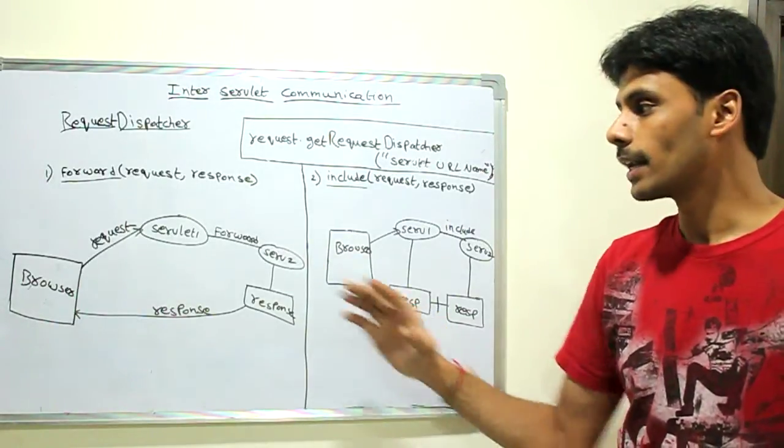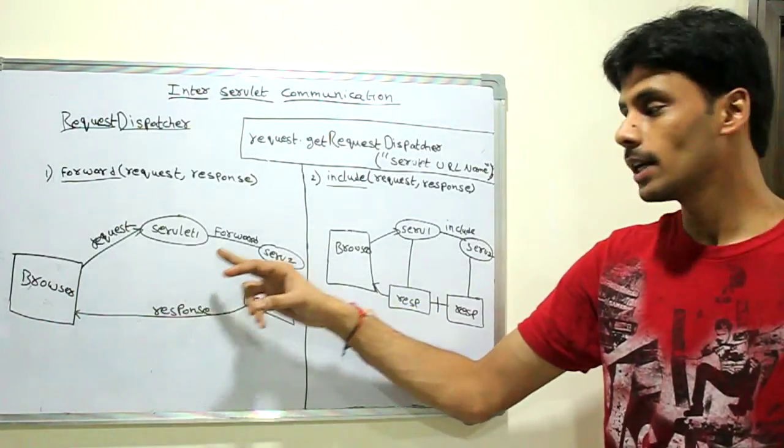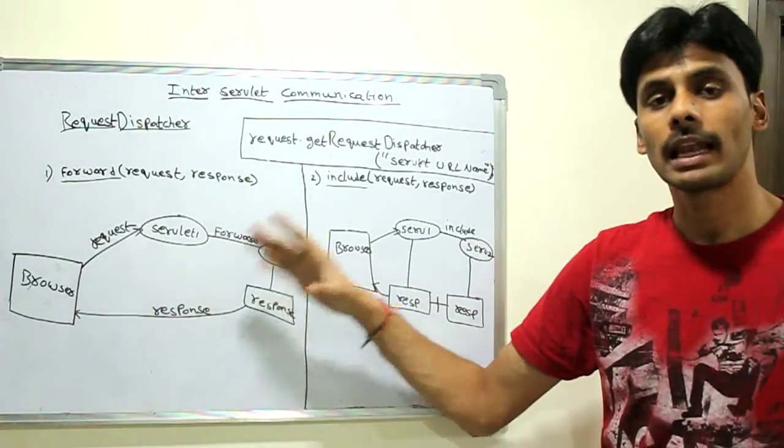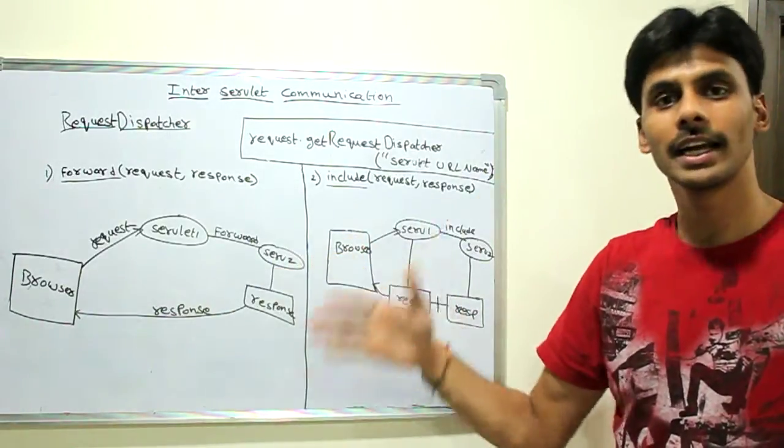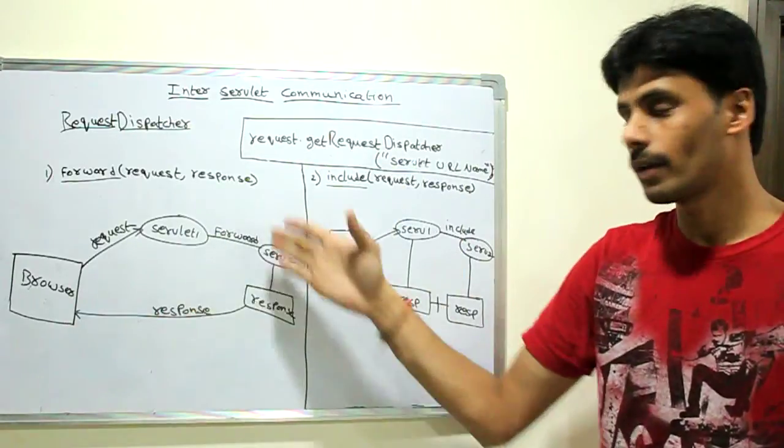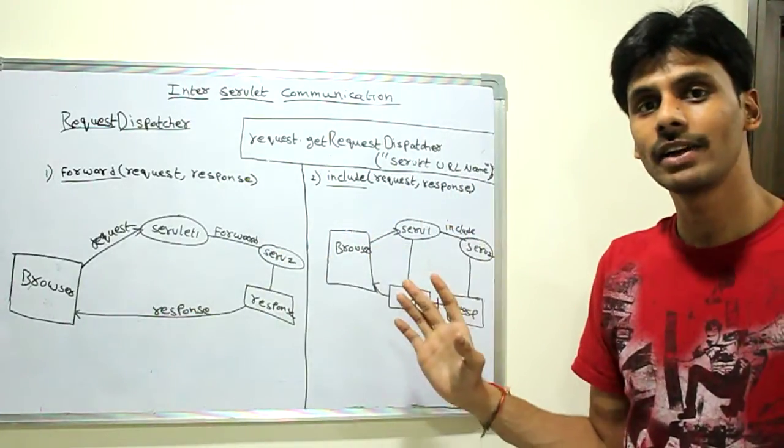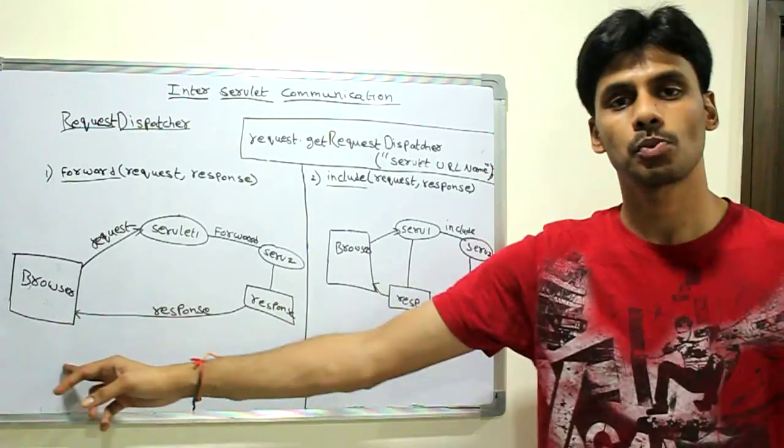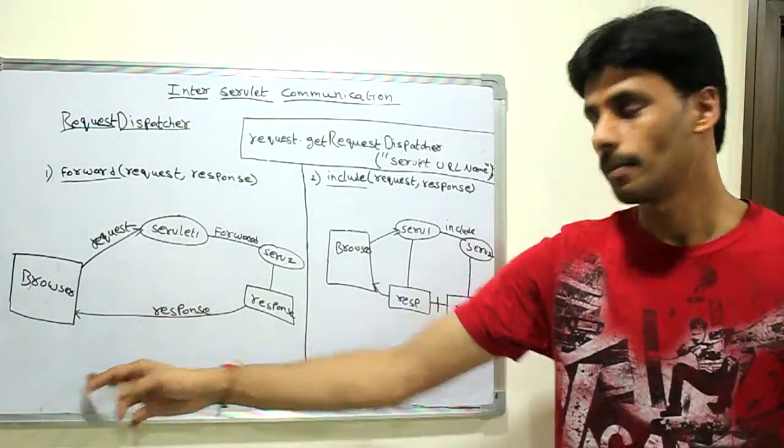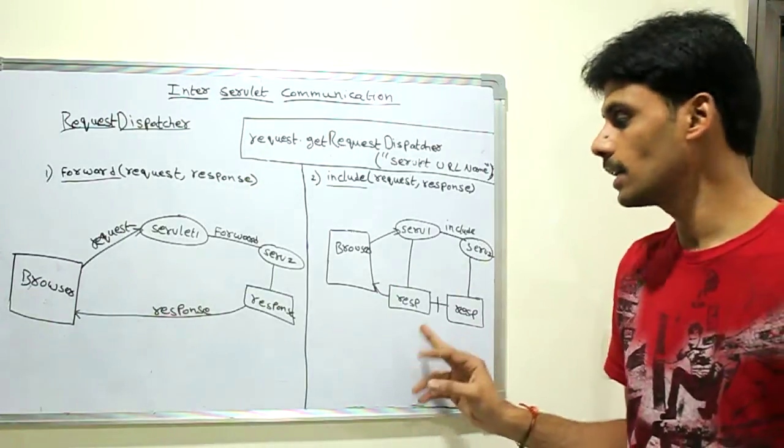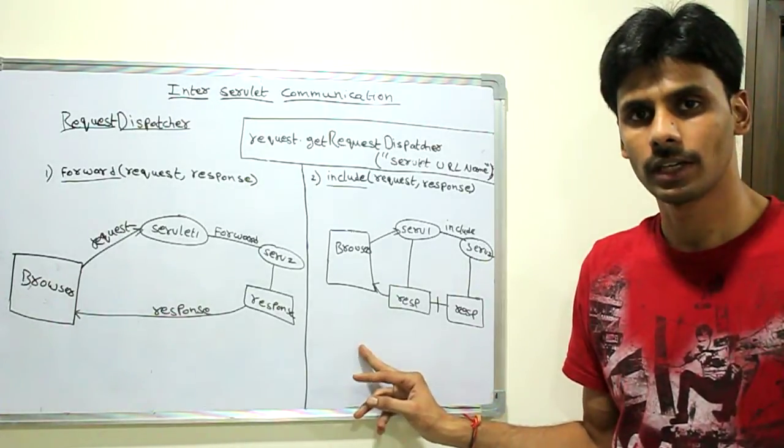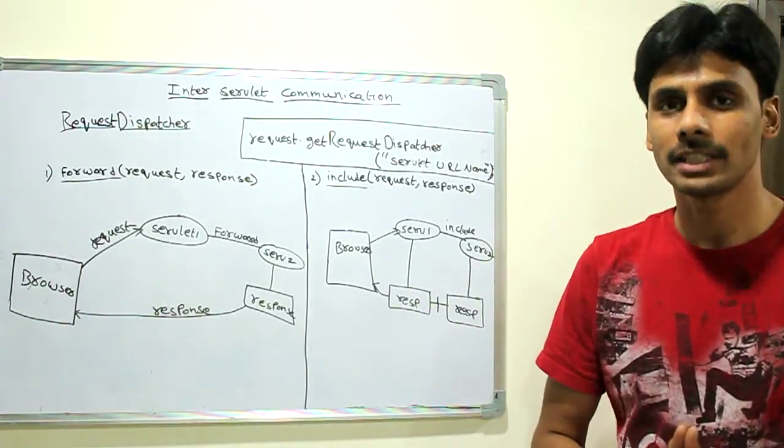So that's the key difference. In case of forward mechanism, if you have three servlets delegating the request from one servlet to another, the last servlet in the chain will send the response back to the browser. But in case of include, all the responses are merged together and sent back to the browser. It's that easy to do request dispatching.